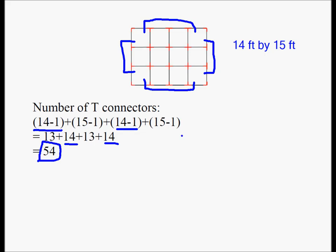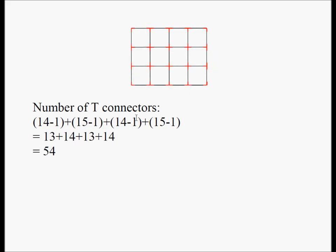So you're going to need 13 which is 14 minus 1, 13 which is 14 minus 1, and 14 and 14 because they are both equal to 15 minus 1. If you add them all up, you're going to need 54 T connectors. You have to understand that T connectors are along the edges and how they are related to the dimensions of the original lattice.